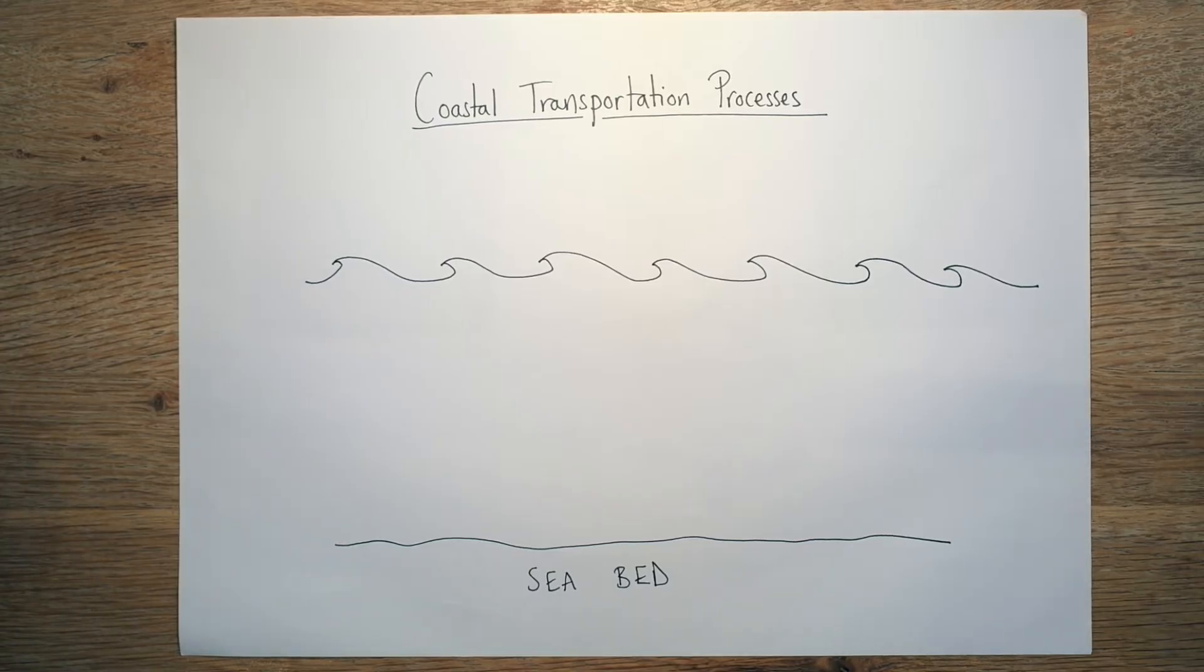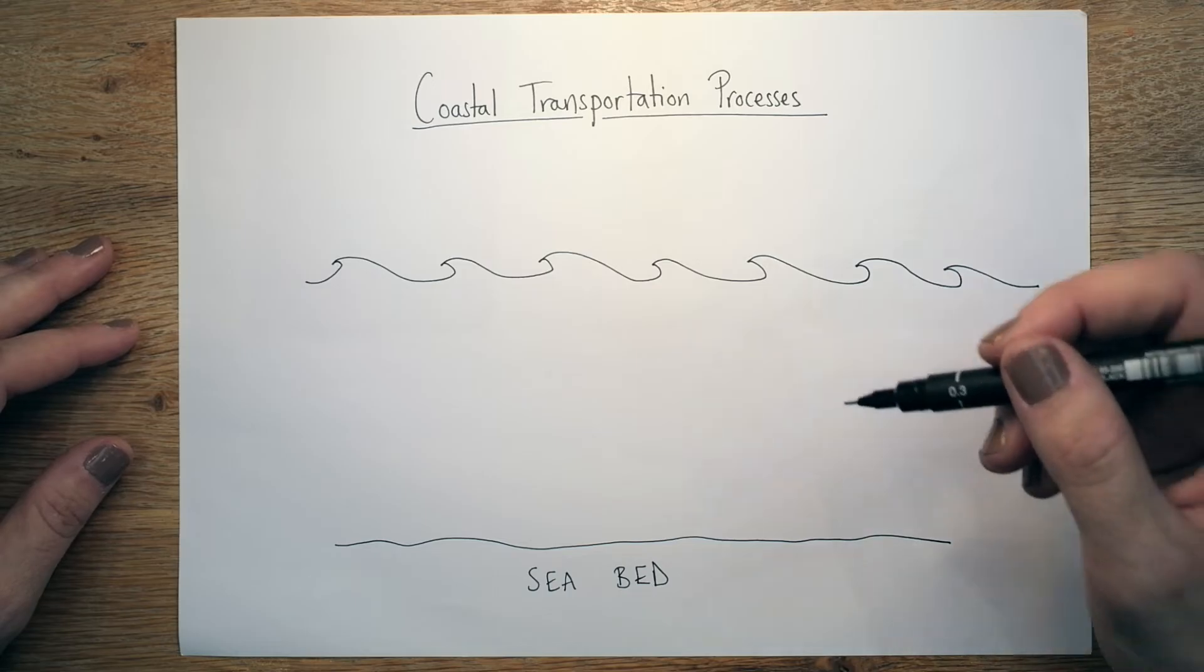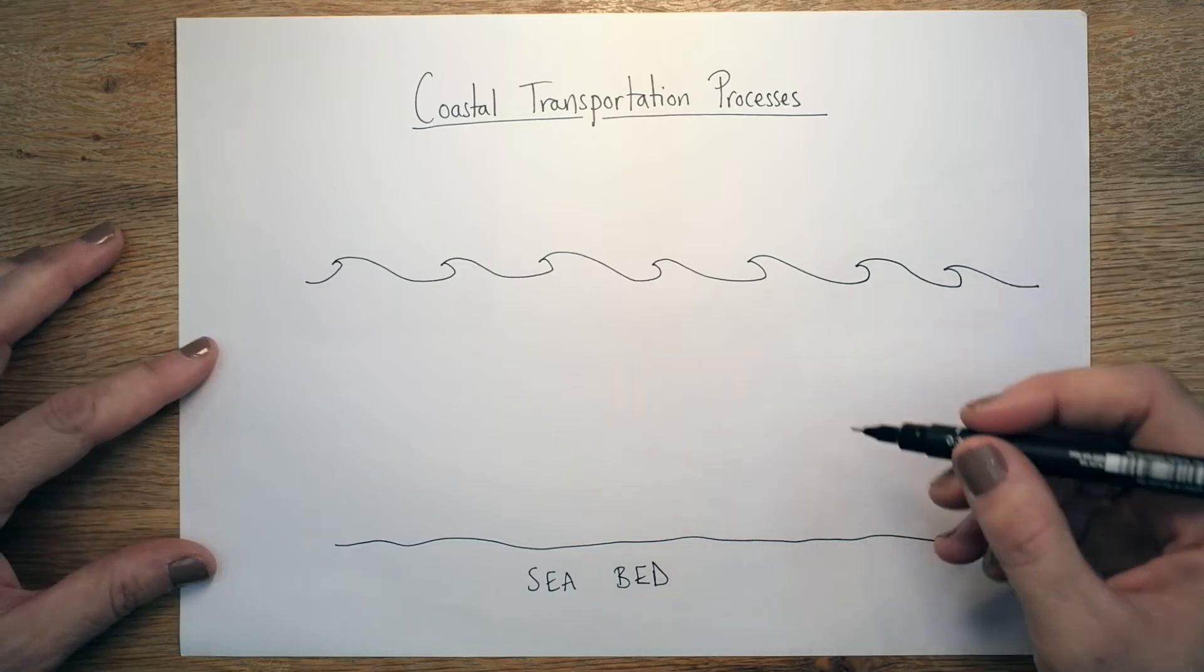So there are four different types of coastal transportation that you need to be aware of for AQA GCSE geography. And what we're going to do is we're going to start with the heaviest particles and then move to the lightest.